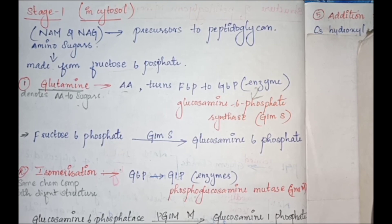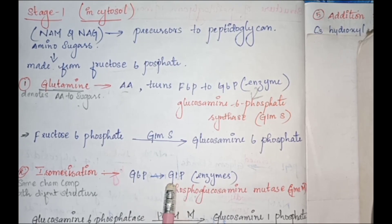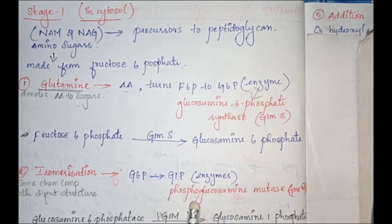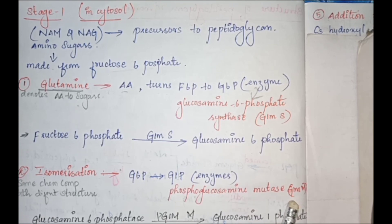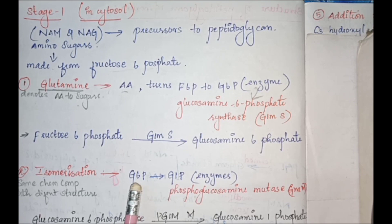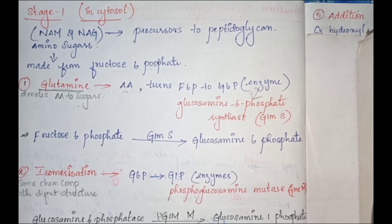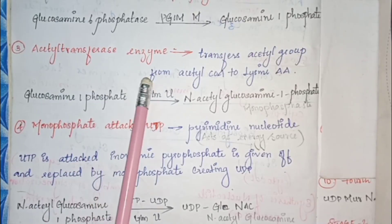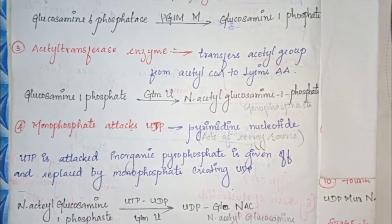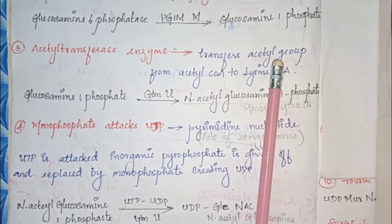In the next step, isomerization takes place — the sugars have the same chemical composition but differ in structure. The glucosamine-6-phosphate is converted into glucosamine-1-phosphate with the help of the enzyme phosphoglucosamine mutase, which isomerizes the structure.